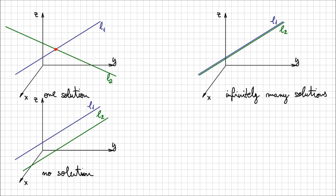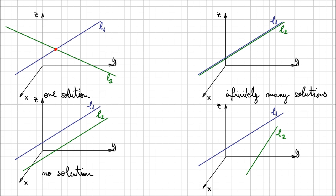In three-space, there is also a possibility for two lines to be non-parallel and yet not intersect. That is possible for lines that don't lie in the same plane — this is specific to three-space, because in two-space lines are always in the same plane. Since they don't intersect, they have no solution. These lines are called skew lines.